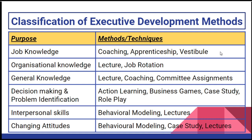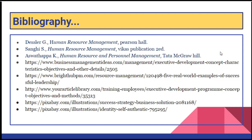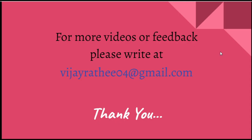Please note that we have quoted different methods for a single purpose, which shows that more than one method or technique could be used to achieve a specific purpose. However, the different methods quoted for a single purpose do not produce the same result. For example, if we want to make a change in the attitude of executives, behavioral modeling will produce the best results, lectures are the second best option, and case study is the third best. With this, we wind up our lecture. Hope you enjoyed it — please feel free to write feedback. Thanks for your patience and learning. Thank you very much.